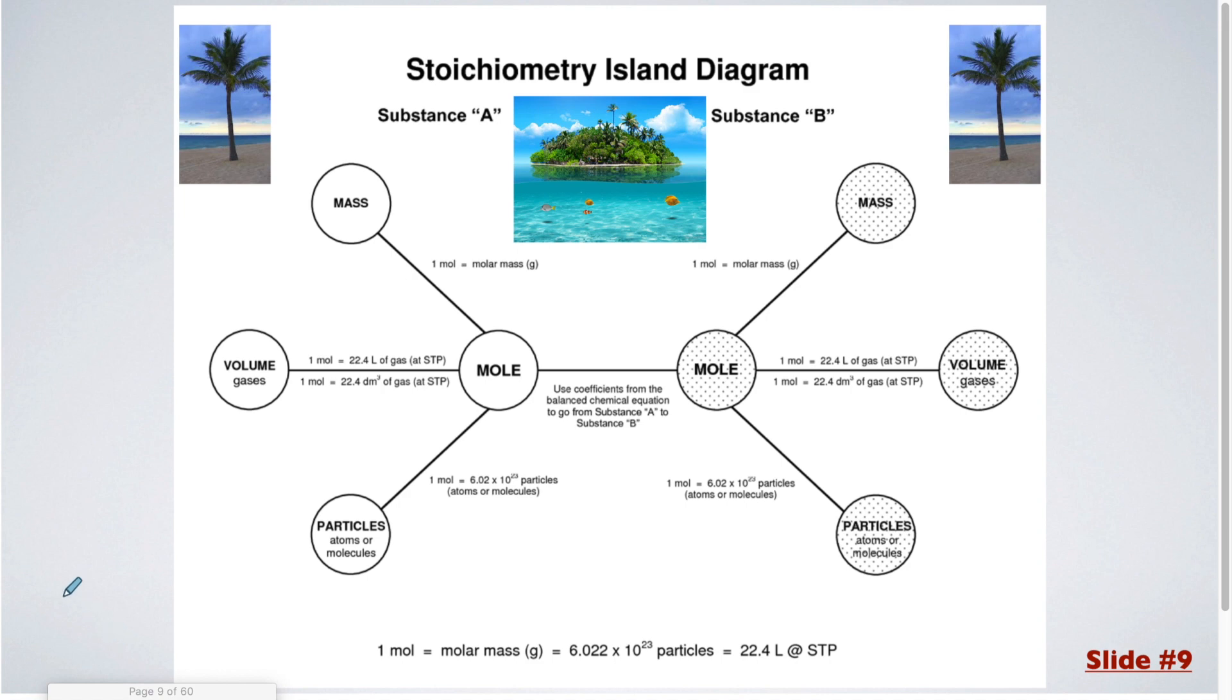For our final topic within this first notes video, we're going to be looking at something called stoichiometry island. This diagram is a reference material that you would be able to use for any test or quiz, and I will post a copy of this to Google Classroom. Over here on the left side of the island, you can see that this is where you have substance A, and on the right side, this is where you have substance B. So if you are converting between two different things, let's say I'm going from nitrogen to ammonia, like in one of our previous examples, that means we're going from the left side of the island to the right side of the island. On the far left side, you can start with either a mass, a volume, the number of particles, which could be your atoms or molecules, or your number of moles.